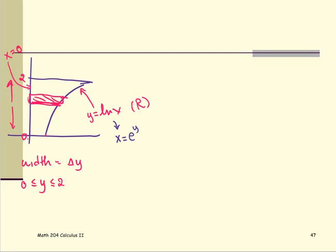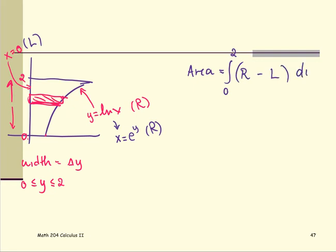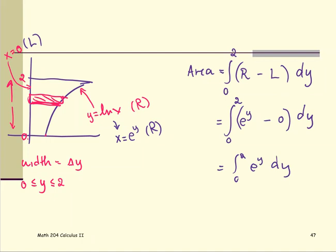So x equals e^y becomes the right function, and x equals 0 is the left function for the entire region. The area is the definite integral from y=0 to y=2 of (right minus left) dy, which is the integral from 0 to 2 of (e^y minus 0) dy. This simplifies to just the integral of e^y with respect to y from 0 to 2 — much cleaner than the dx approach.